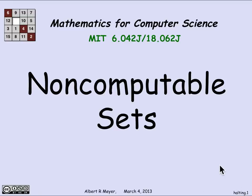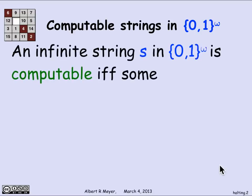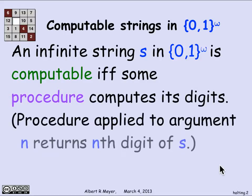Let's look at the class of infinite binary strings. We've seen that there are an uncountable number of infinite binary strings, because there was a simple bijection between the infinite binary strings and the subsets of the natural numbers — that is, the power set of N. A computable string is one where there's simply a procedure that will tell me what its digits are: the procedure applied to argument n will return the nth digit of the string s. That's what it means for s to be computable.